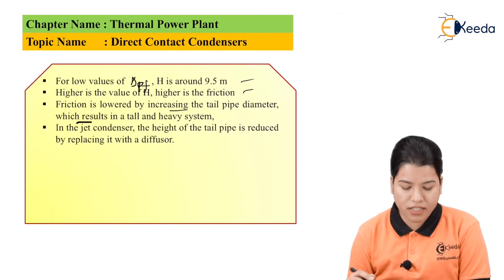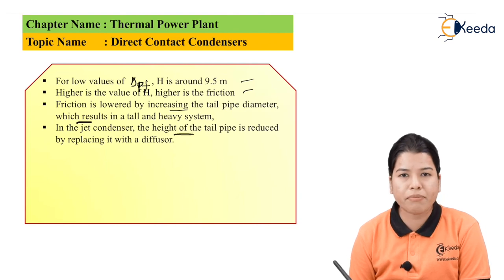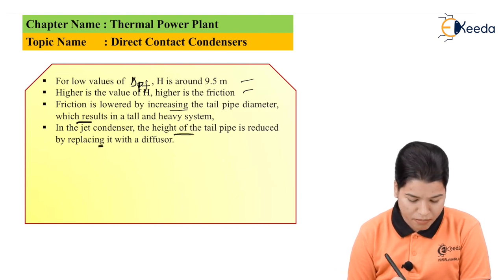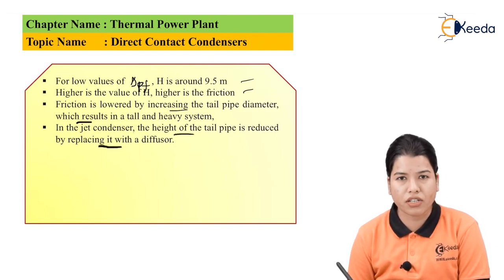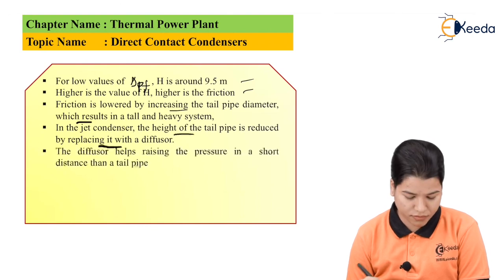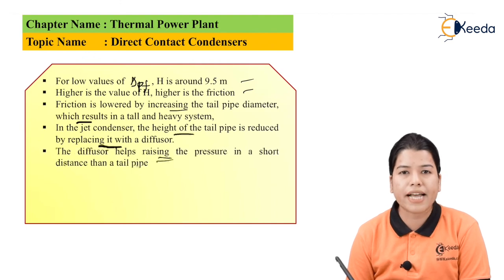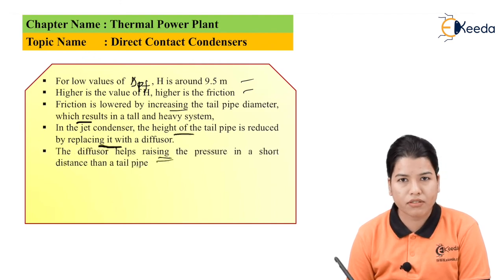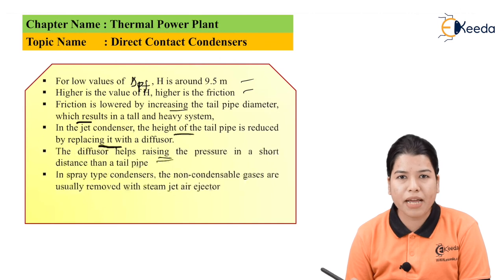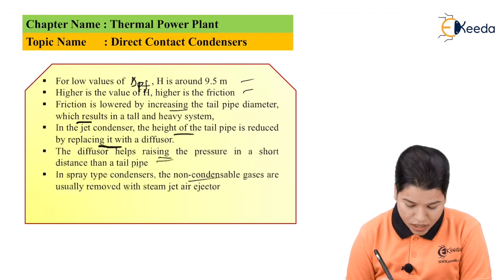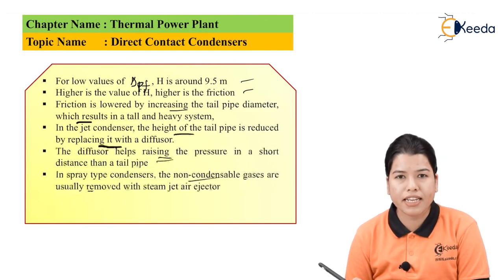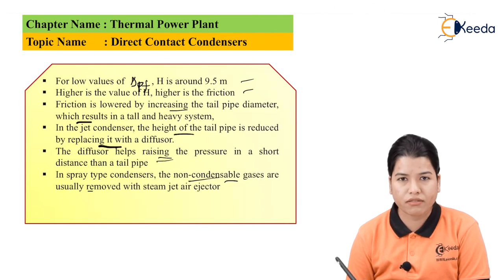In the jet condenser, the height of the tail pipe is reduced by replacing it with a diffuser, as shown in figure C. The diffuser helps raise the pressure over a short distance compared to the tail pipe. In spray type condensers, non-condensable gases are usually removed with a steam jet air ejector.